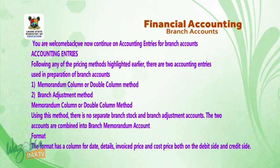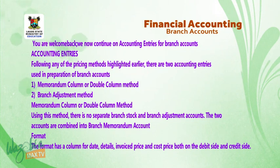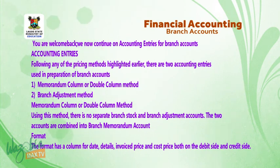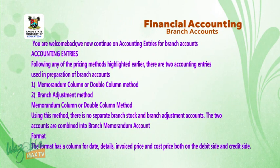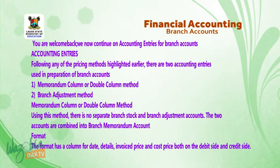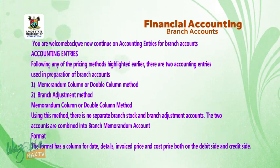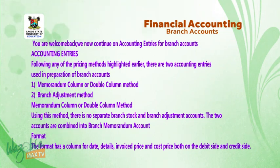Welcome back. We now continue on accounting entries for branch accounts. Following any of the pricing methods highlighted earlier, there are two accounting entries used in preparation of branch accounts: one, the memorandum column or double column method; and two, the branch adjustment method. Using the double column method, there is no separate branch stock and branch adjustment account — the two accounts are combined into a branch memorandum account. The format has columns for date, details, invoice price, and cost price on both debit and credit sides.